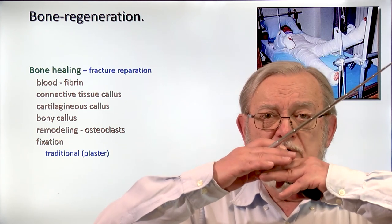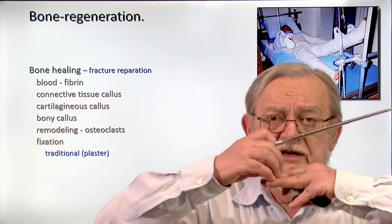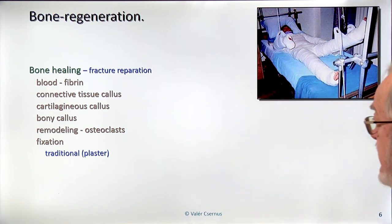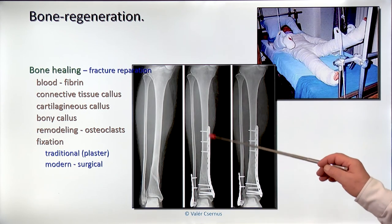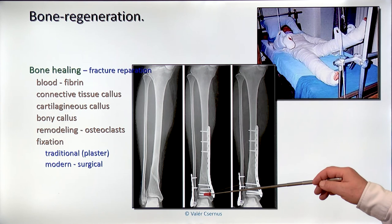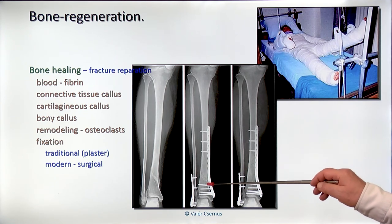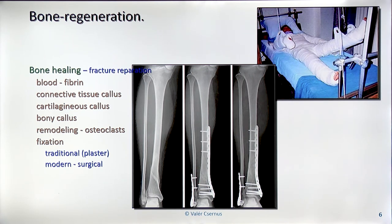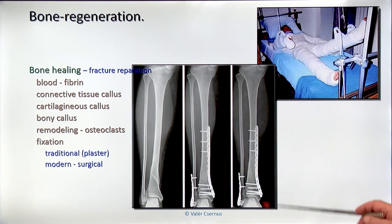The modern fixation is orthopedic surgery with metal implants: the two broken ends are fixed to each other very close and very firmly with metal hardware. The advantage is that the patient can walk within two or three days without any problem, and the healing happens in two or three weeks with complete curing. This is what I wanted to talk about today. Hopefully you enjoyed it. Thank you very much for your attention.